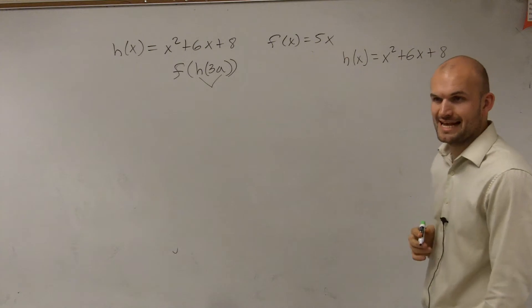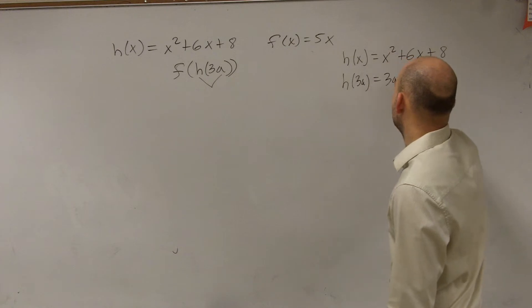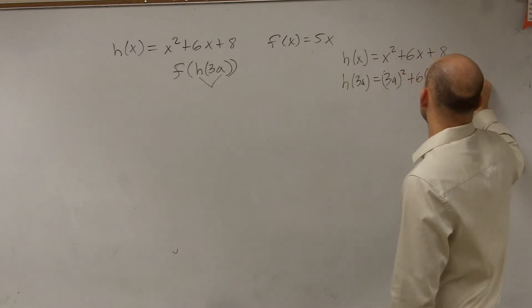So if I say what is h of 3a, you guys can determine h of 3a is equal to 3a squared plus 6 times 3a plus 8.